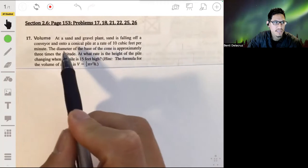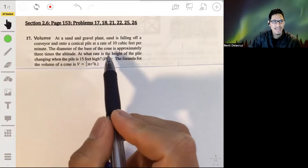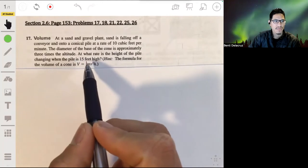The diameter of the base of the cone is approximately three times the altitude. The question is, at what rate is the height of the pile changing when the pile is 15 feet high?